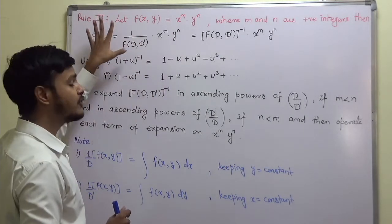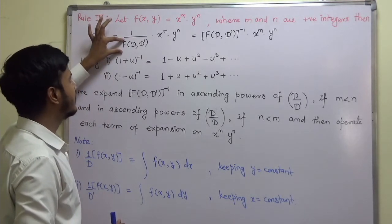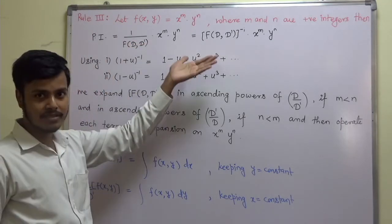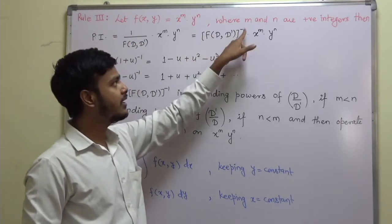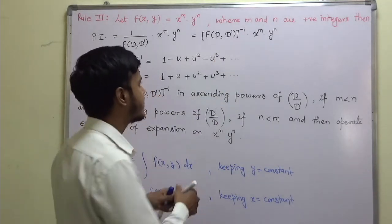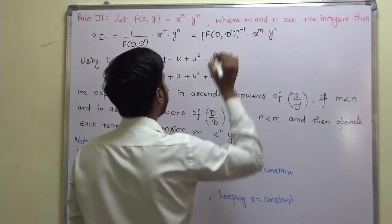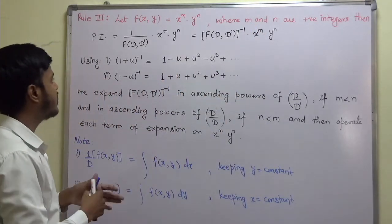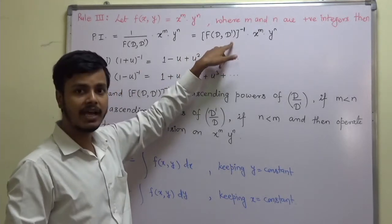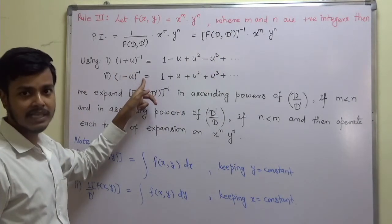What exactly we have to do in this rule is you just have to express this f of D, D-dash as 1 plus something and take it to the numerator. The moment you take this to the numerator, you will come to any of these conditions — like 1 plus D by D-dash, or 1 plus some D D-dash, or 1 minus D D-dash.